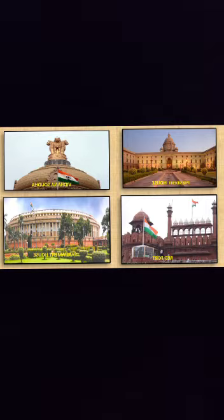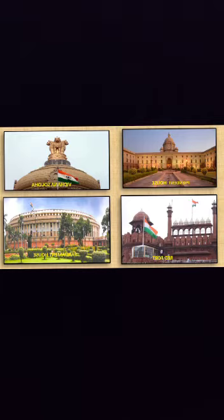Political science deals with the state and the government. The word 'state' here is not about specific states like Karnataka, Andhra Pradesh, Gujarat or any other states. Here, 'state' means a nation or a territory considered as an organized political community under a government. It studies the origin and nature of the state and forms a political institution. Political institutions are arrangements by the government to perform particular functions for the betterment of the people and the democracy.